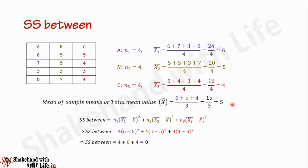Now for calculating sum of squares for variance between the samples, we have three samples. From these three samples we understand how to calculate the sum of squares for variance between the samples, and at the same time you will understand the meaning of it. We have sample A, sample B, and sample C — each has four data points.